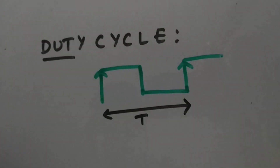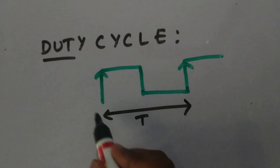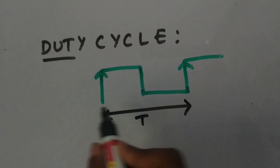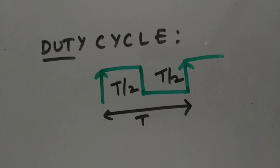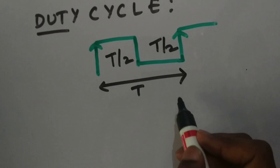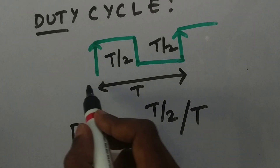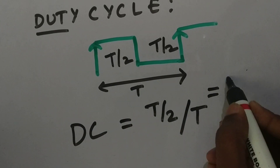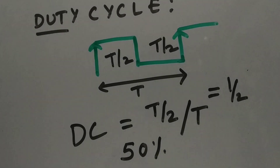Now let's go to clock divided by 3 with 75% duty cycle. First, let me explain what duty cycle is. Duty cycle is the fraction of time the signal is on over the total time period. For example, if a signal has time period T and is on for T/2 and off for T/2, the duty cycle is (T/2)/T = 1/2, which is 50%.